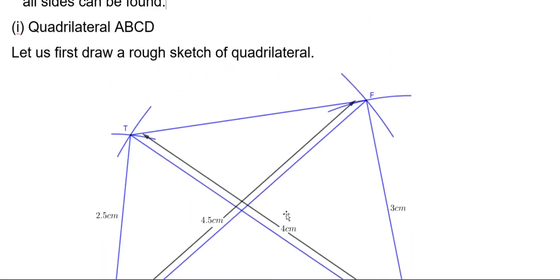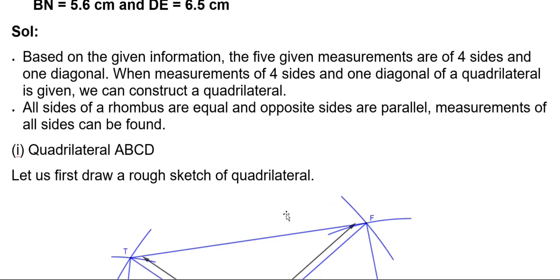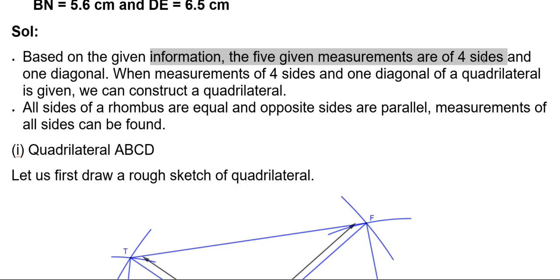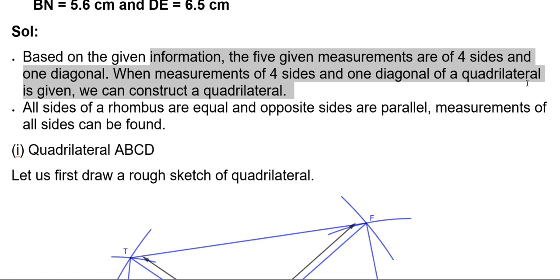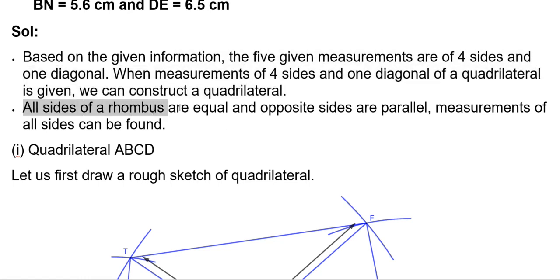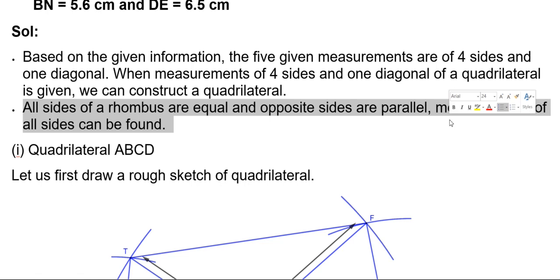Now, the solution is based on the given information. The 5 given measurements are 4 sides and 1 diagonal. When measurements of 4 sides and 1 diagonal of a quadrilateral are given, we can construct the quadrilateral. Second rule: in a rhombus, all sides are equal and opposite sides are parallel, so measurements of all sides can be found.